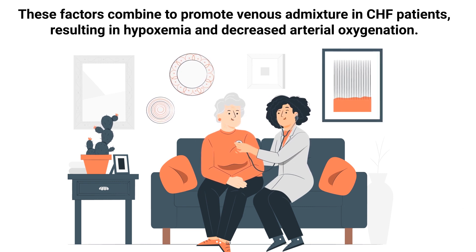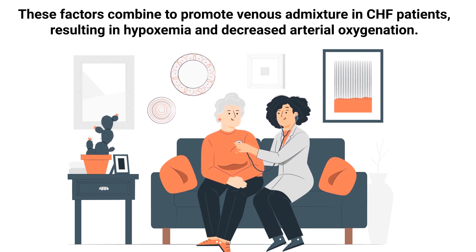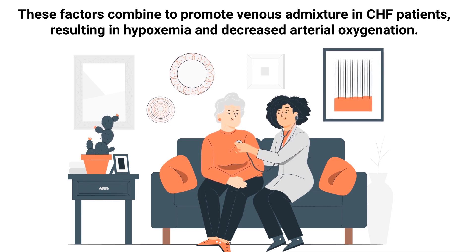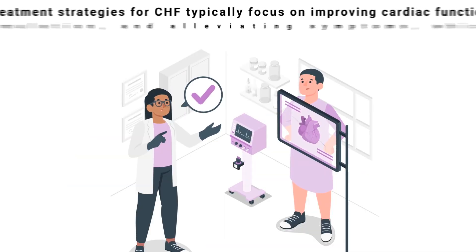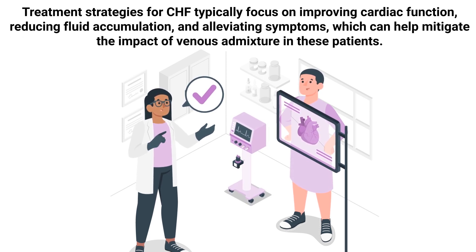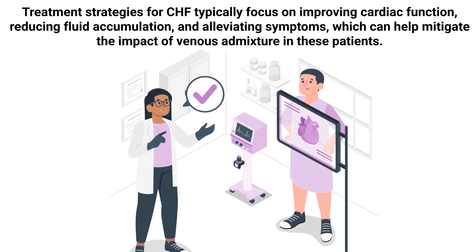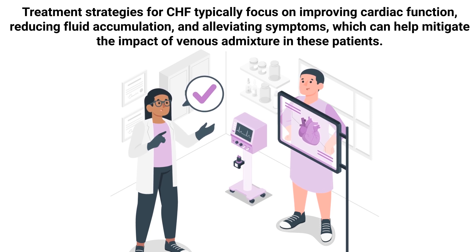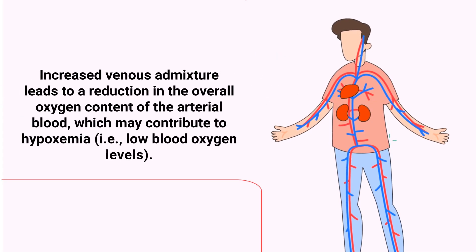These factors combine to promote venous admixture in CHF patients, resulting in hypoxemia and decreased arterial oxygenation. Treatment strategies for CHF typically focus on improving cardiac function, reducing fluid accumulation, and alleviating symptoms, which can help mitigate the impact of venous admixture in these patients.